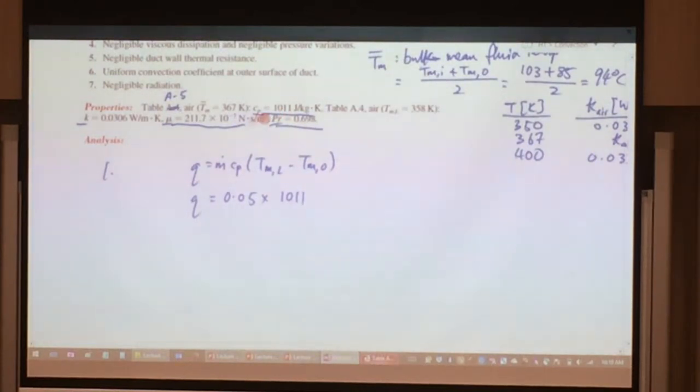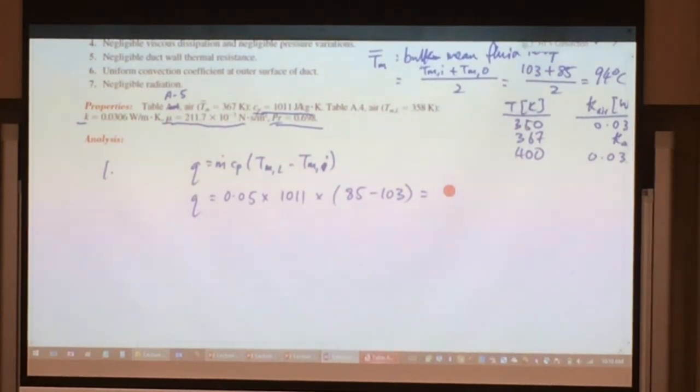I'm using all these numbers from here. If you use Holman textbooks, you might get a little bit different number, but they are both correct. Multiply by the temperature difference 85, I think this one should be T_i, minus 106. So doing the calculation, you get minus 1010 watts.